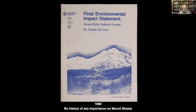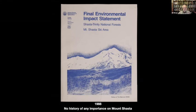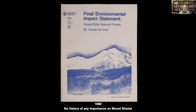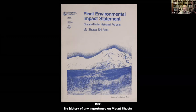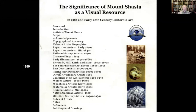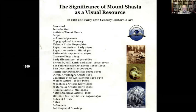It took me months before I finally figured out that what was missing was looking at the mountain as a whole — as a resource for inspiration. That was a history I could document. So I went ahead and wrote a book, finished in 1989, called 'The Significance of Mount Shasta as a Visual Resource in 19th and Early 20th Century California Art.' It has chapters on the San Francisco art boom, the railroad artists, the early expeditions, the watercolors, the women artists, visionary artists — all kinds of chapters, about 150 pages.